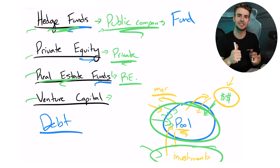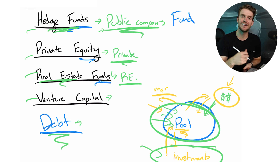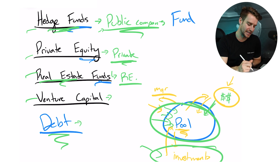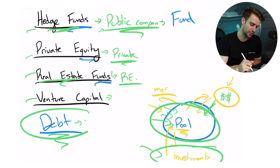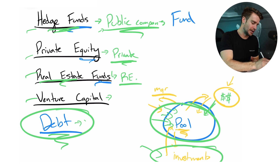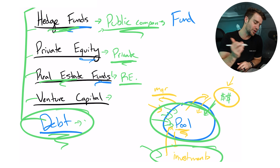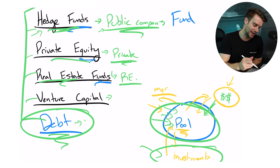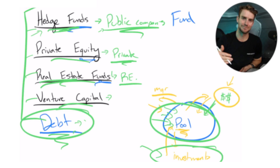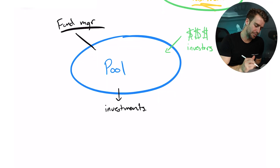Venture capital is like Shark Tank — a pool of money that invests into startup companies. Debt funds issue debt — mortgages, loans, lending products. So just two minutes in, you've already learned the differences between hedge funds, private equity, real estate, venture capital, and debt funds. Let's go a layer deeper.